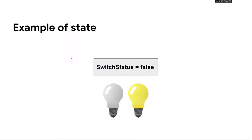For example, suppose you want to create an application where there is a button to toggle turning a light on and off. The switch status is the state. The value in that state is false, so the dark bulb is shown. As soon as we change the switch status to true, the light will be shown. This is what state does.